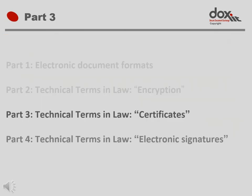This was Part 3 in the series of four videos called Working with Electronic Documents. Part 1 touched on the most basic concepts in working with electronic documents. In Part 2, we discussed encryption, how it works, and why we can trust the security it provides. In Part 3, we explained what certificates are and what the role is of the South African Accreditation Authority. Make sure you also watch Part 4, which discusses how certificates can be used to add electronic signatures to electronic documents.